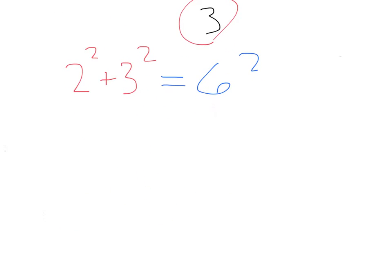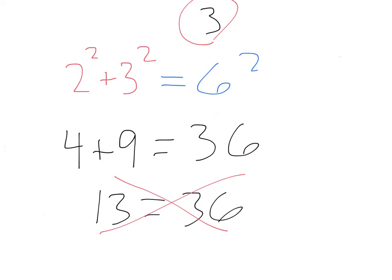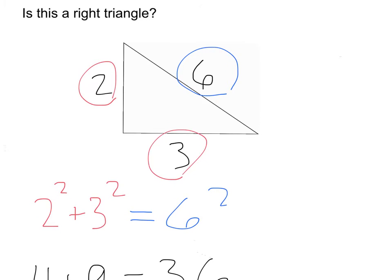Well, 2 times 2 is 4, plus 3 squared is 9. Does that equal 6 squared? 36. 9 plus 4, that's going to be 13. Does that equal 36? No, of course it doesn't. So, what we can conclude about this triangle is it is not a right triangle.